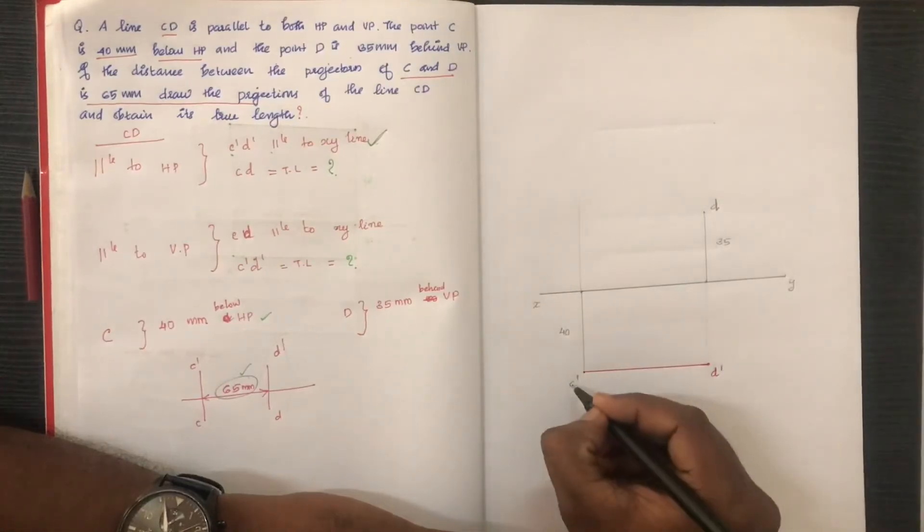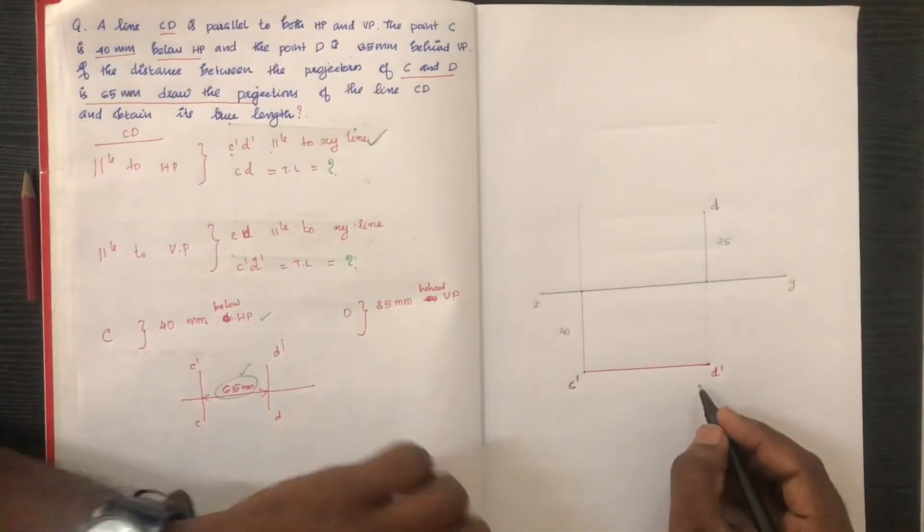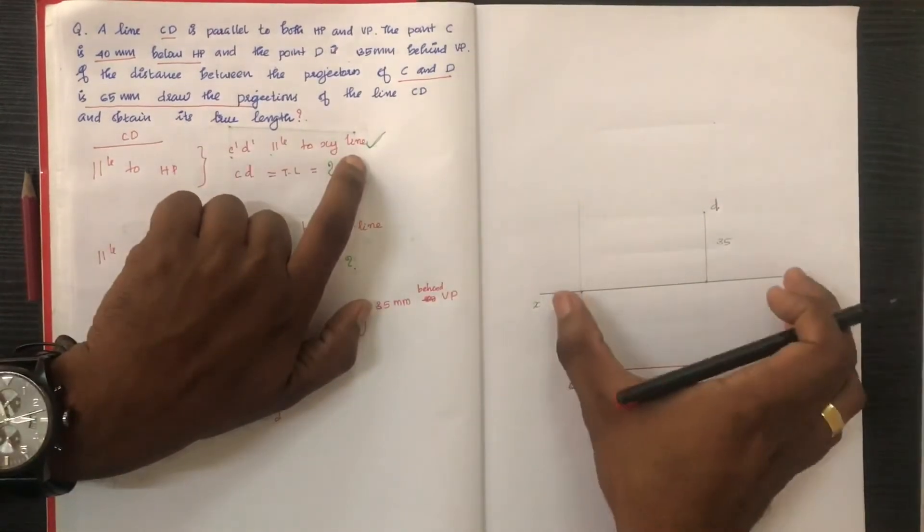D-dash and c-dash d-dash are parallel to the XY line — confirming the projection.